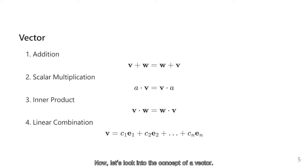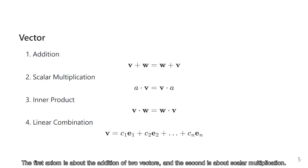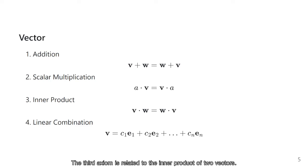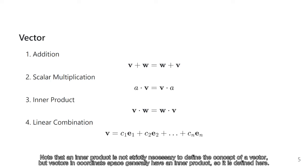Now, let's look into the concept of a vector. Like real numbers, vectors are also defined through a set of axioms. The first axiom is about the addition of two real vectors, and the second is about scalar multiplication. The third axiom is related to the real inner product of two vectors. Note that an inner product is not strictly necessary to define the concept of a vector, but vectors in coordinate space generally have an inner product, so we defined it here.